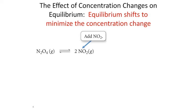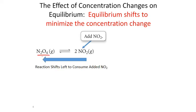According to Le Chatelier's Principle, the reaction will shift to minimize this disturbance. What that means is essentially if we add NO2, the reaction equilibrium is going to shift to consume that NO2. That means the reverse reaction speeds up so that we consume NO2 and produce more of our reactant, N2O4. We say that the reaction shifts left in this situation.